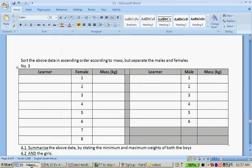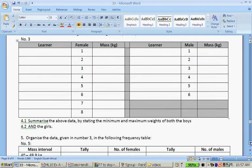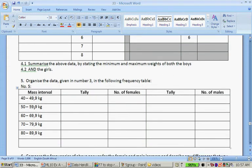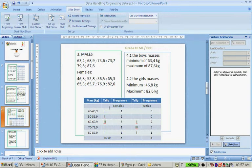Organize the data given in number 3 in the following table. Between 40 and 49.9, there's 1 female, no males. Between 50 and 59.9, 2 females, no males. Between 60 and 69.9, 3 females, 2 males. Between 70 and 79.9, 1 female, 3 males. Between 80 and 89.9, 1 female and 1 male.